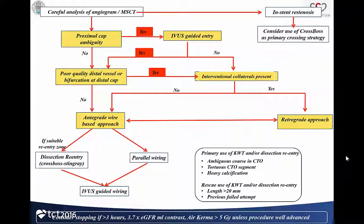The interesting thing is also this algorithm from the Asia Pacific club — can this algorithm help me? The proximal cap ambiguity means we could also do IVUS-guided entry, because there is a nice septal and a poor distal vessel quality with bifurcation of the distal vessel. So the question is: do you have interventional collaterals? If yes, we can go retrograde; if no, we should go antegrade wire-based strategies.